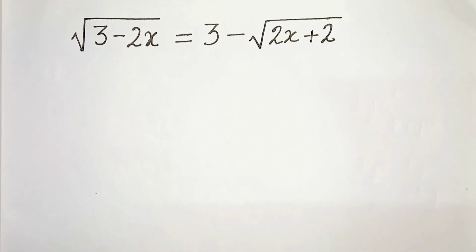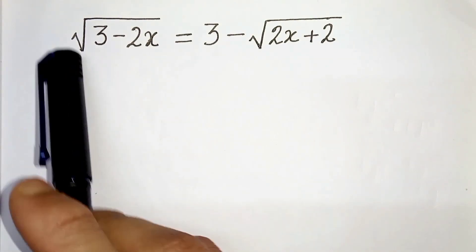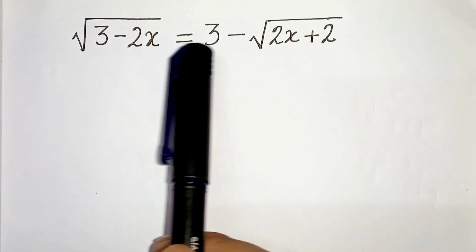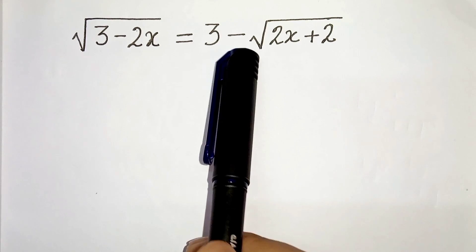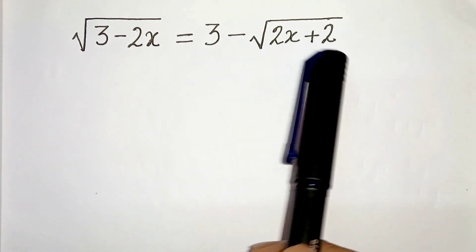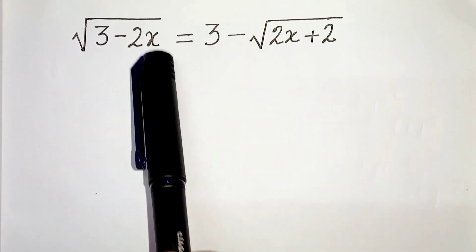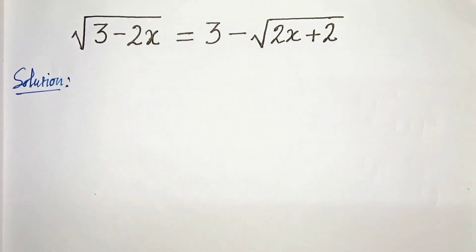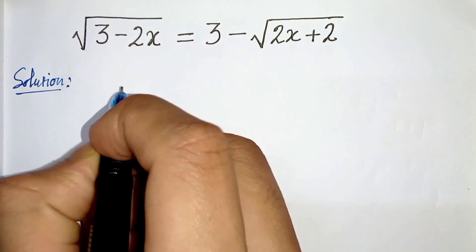Hello everyone. In this video we have √(3 - 2x) = 3 - √(2x + 2). I have to solve for x. So let's start. First of all, we will square both sides.